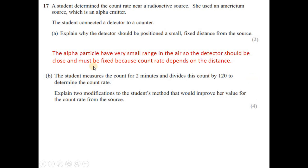The student measures the count for two minutes and divides this count by 120 to determine the count rate. Explain two modifications to the student's method that would improve her value for the count rate from the source. A typical question of count rate and radioactivity. If you need to improve your reading or calculation, the first technique is you should count the background radiation and subtract it from your measured count rate to get the accurate count rate. And then you can repeat your count rate, multiple readings and use average value.